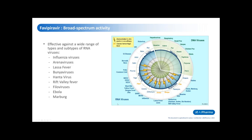This slide illustrates the broad-spectrum activity of favipiravir against a broad host of RNA viruses. This includes influenza viruses, which the drug was originally developed for. It also includes other RNA viruses such as Lassa, Hanta, Ebola, Marburg, and others.